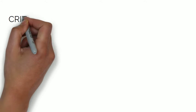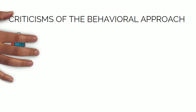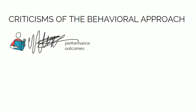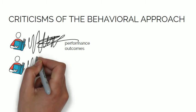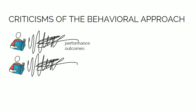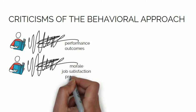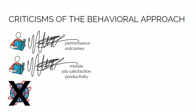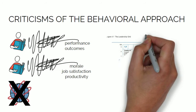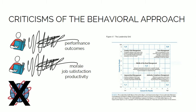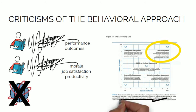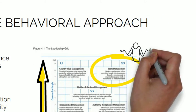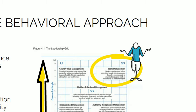There are a few criticisms of the behavioral approach. The research has not adequately shown how leaders' behaviors are associated with performance outcomes. Research has not been able to establish a consistent link between task and relationship behaviors and outcomes such as morale, job satisfaction, and productivity. This approach has failed to find a universal style of leadership effective in almost every situation. The behavioral approach implies that the most effective style is the high-high style — meaning high task and high relationship — but it remains unclear whether the high-high style is truly the best style of leadership.